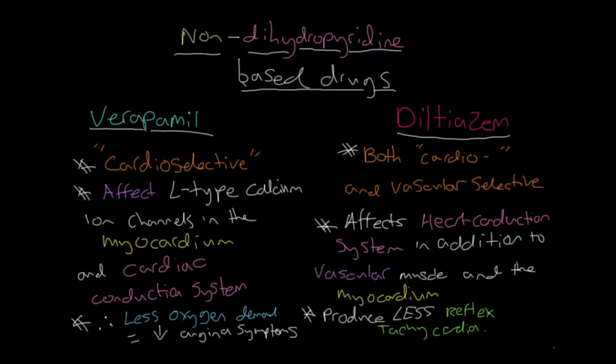Diltiazem sits somewhere between the other two classes, being a partial antagonist for vascular smooth muscle and a partial antagonist for the ion channels present in the heart. Having both cardio-inhibitive and vasodilative properties reduces the risk of reflex tachycardia further and helps prevent angina symptoms whilst also concurrently lowering blood pressure. In general though, the cardio-selective drugs are better suited to the treatment of angina and the vascular-selective drugs are better in the treatment of hypertension.